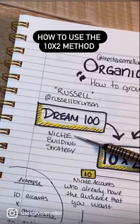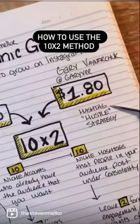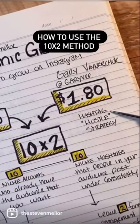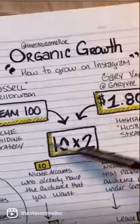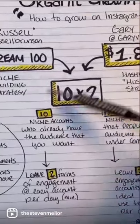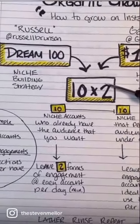Russell has his Dream 100 method and Gary has his Dollar 80 method. I took both of those, put them together for the 10 by 2. Here's how it works.